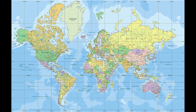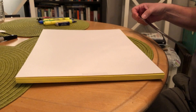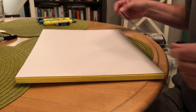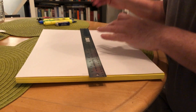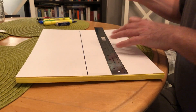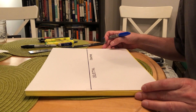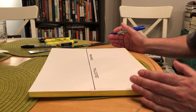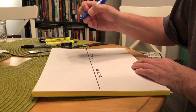Mercator projection has some issues — for example, it exaggerates the size of land near the poles compared to near the equator, which is why Greenland looks so huge on Mercator maps. But for mapping the celestial sphere, Mercator projection is actually really useful, because we don't care about sizes — we just need to keep track of north and south, and Mercator is great for that. So let's stretch out that celestial sphere and draw a horizontal line representing the celestial equator, then draw the ecliptic as a curved line intersecting the equator.